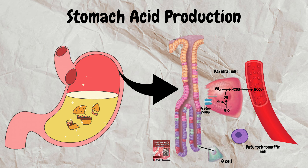A chloride ion from the blood vessel is transported into the cell through the basal side and then transported into the lumen of the gastric gland through the apical side. The hydrogen ion is also pumped from the apical side through the hydrogen-potassium pump — also known as the proton pump — into the lumen. The hydrogen ion and chloride ion then combine to form hydrochloric acid. This is how hydrochloric acid is produced within the parietal cell.